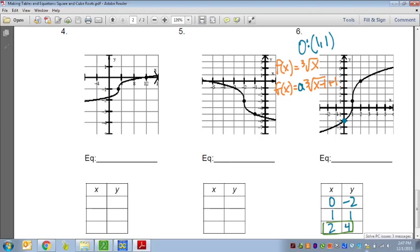Okay, so 2 minus 1 is 1, and the cube root of 1 is 1. So I have 1a, or just a. We subtract 1 from both sides, and we get 3 equals a. So my multiplier is 3 that goes in front, so my final equation is going to be f of x equals 3, cube root of x minus 1 plus 1.